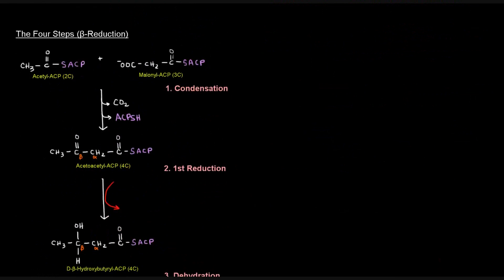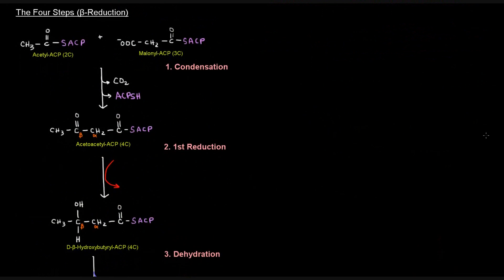Now, on to the actual four steps — what I call beta-reduction. We have acetyl-ACP and malonyl-ACP primed and ready. The first step is the condensation reaction: we connect the acetyl group to the malonyl-ACP portion to get acetoacetyl-ACP.